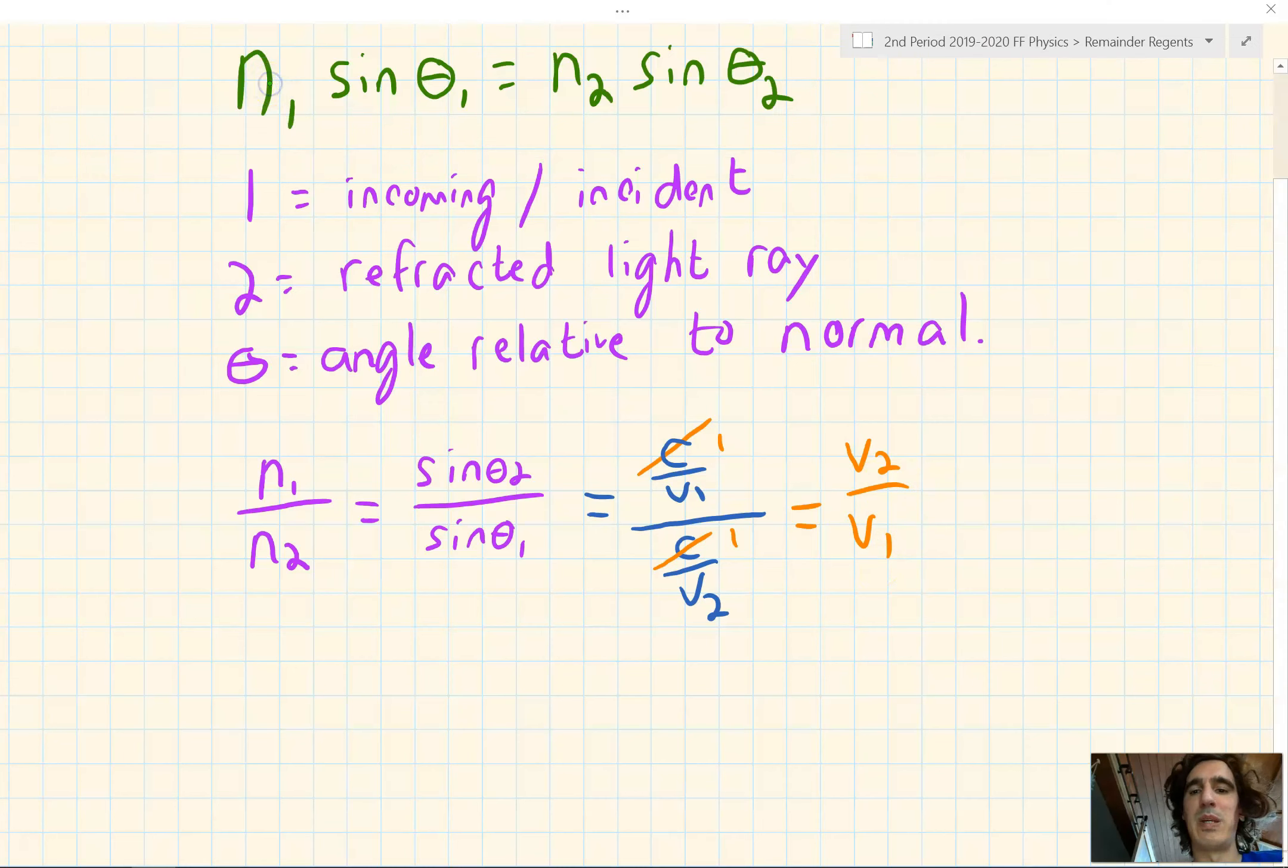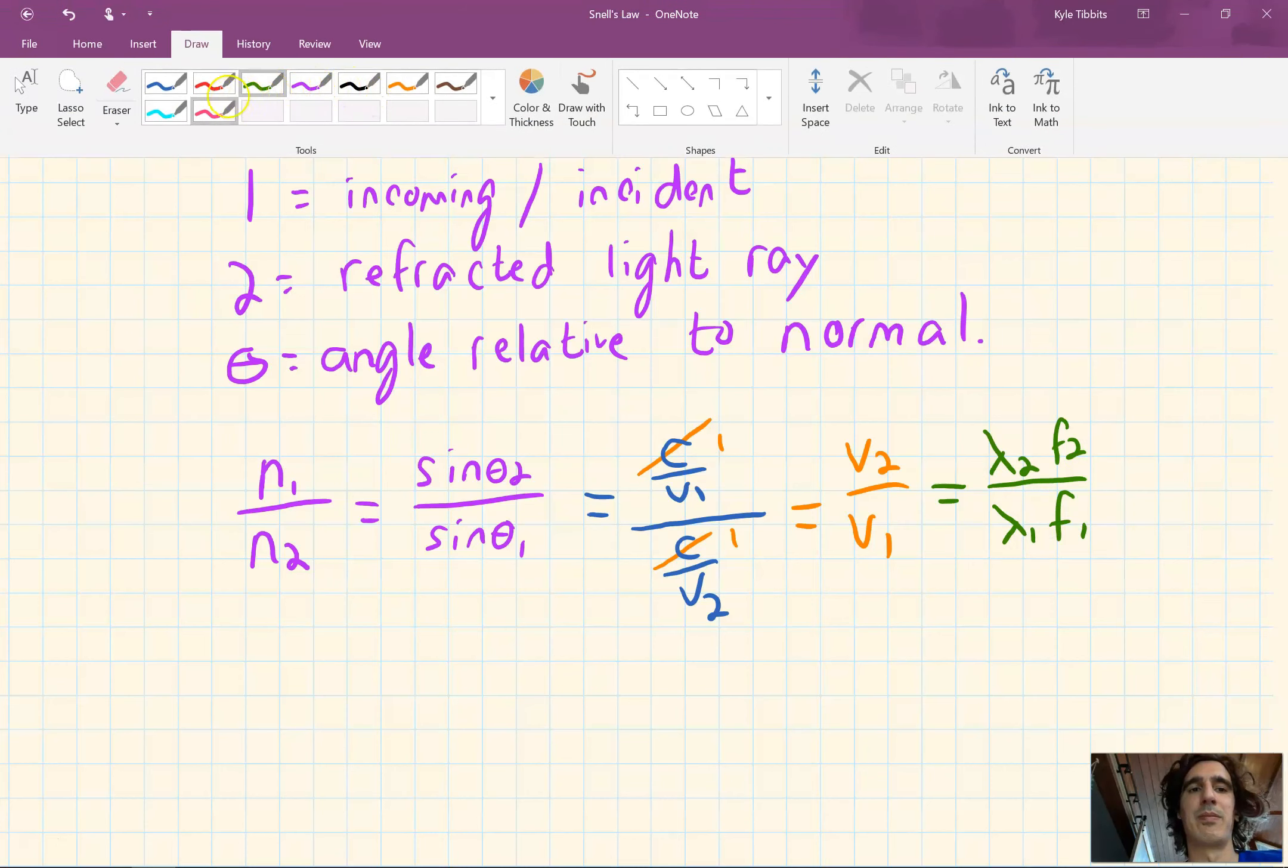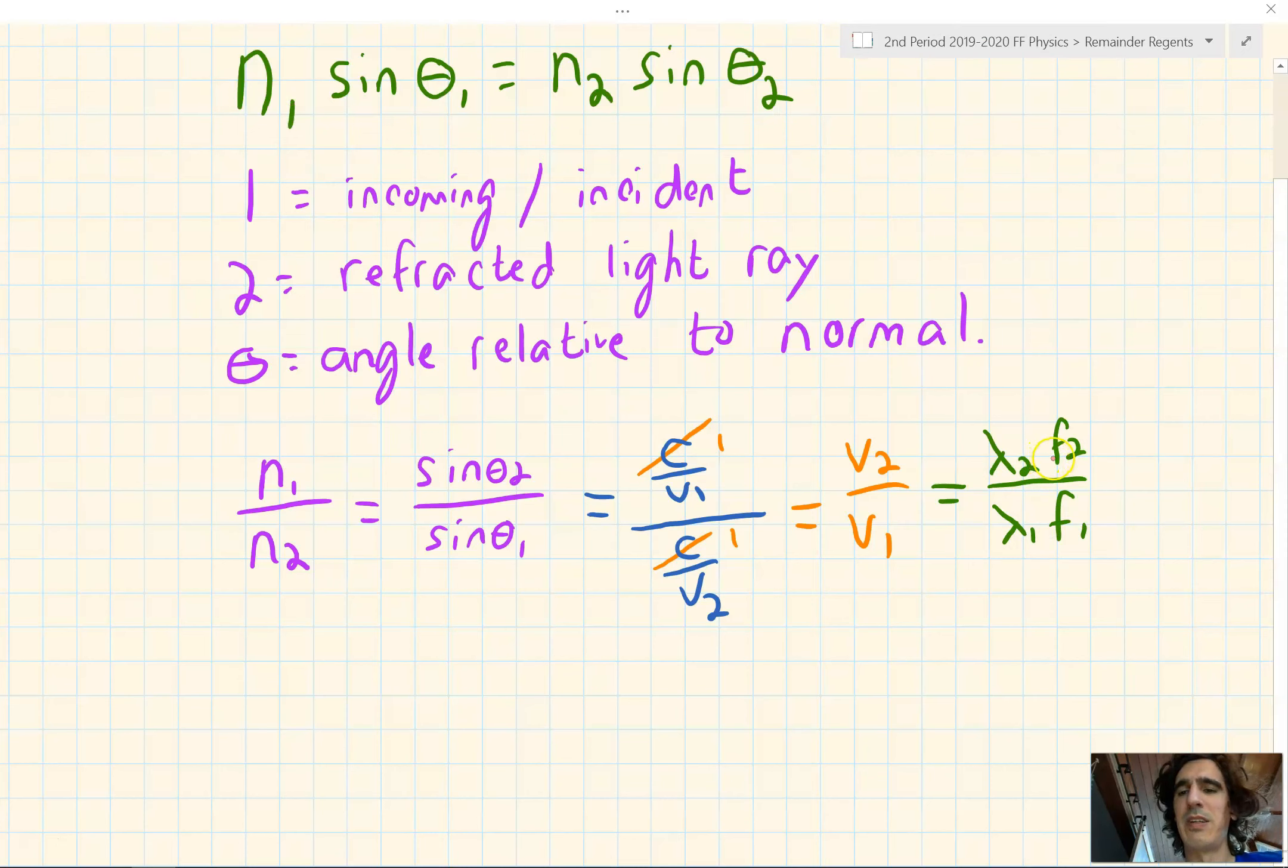And then if we use the speed of light as if it were a wave where v equals lambda f, v₂ turns into lambda₂ f₂ and v₁ turns into lambda₁ f₁. The frequencies stay the same when light enters a new medium, as does the color. So the frequencies cancel and we're left with lambda₂ over lambda₁.